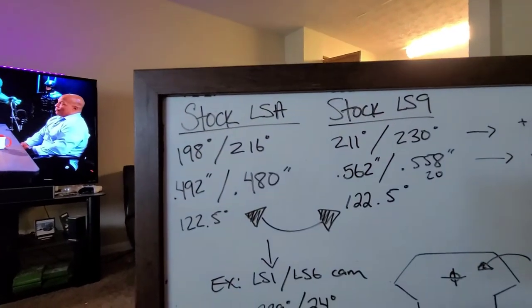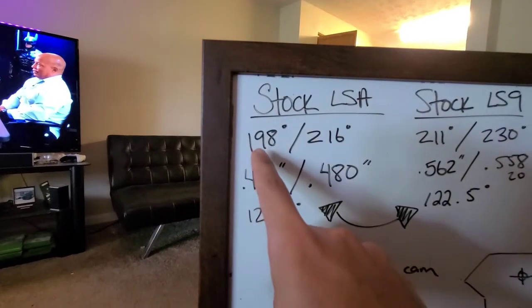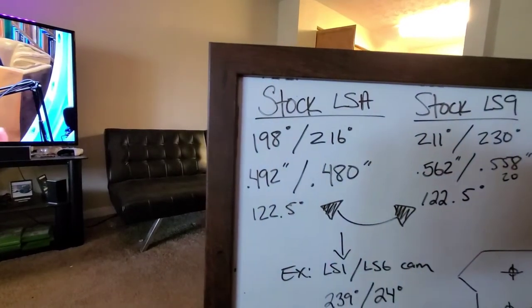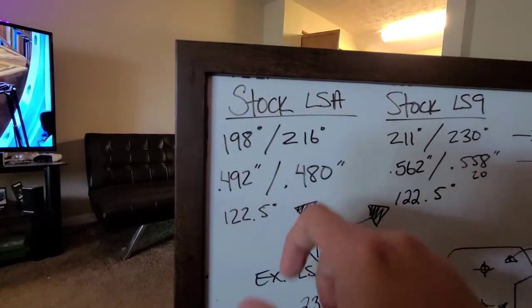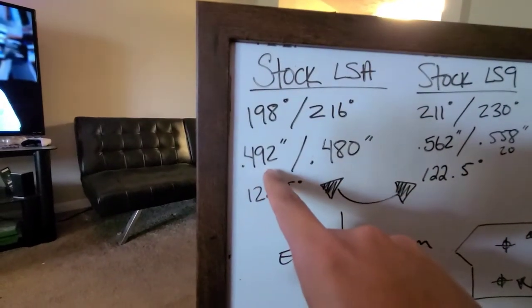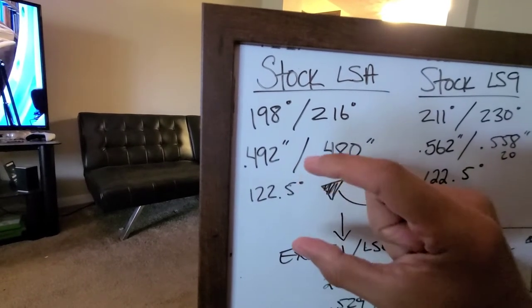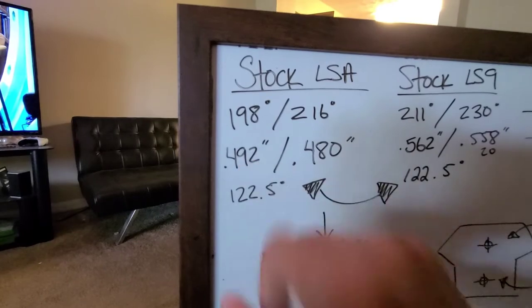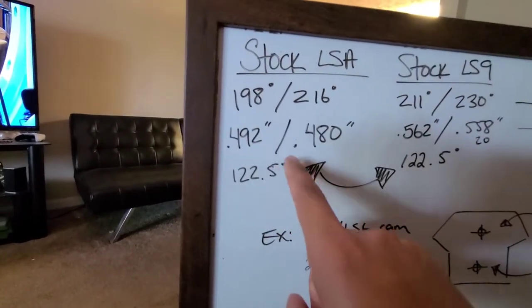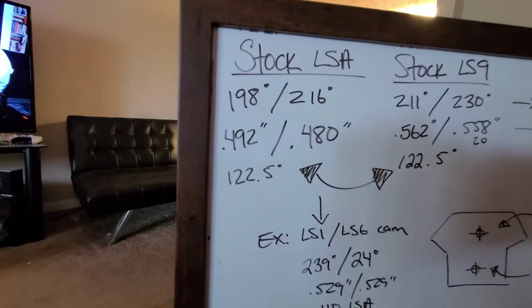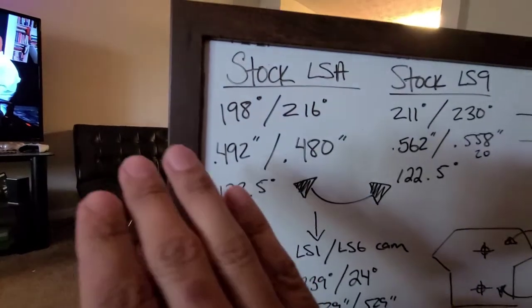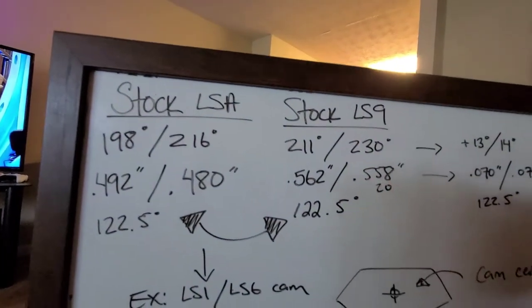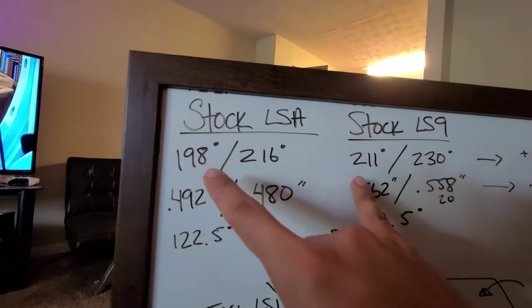If we look at this aspect of it, stock LSA. To kind of break down the numbers of what cam actually means, intake and exhaust, the intake valve is open for 198 degrees of crank rotation. Exhaust same thing. Intake lift on the cam, the actual lobe, 492 thousandths of an inch, almost half an inch, and 480 thousandths on the exhaust, a little bit less.